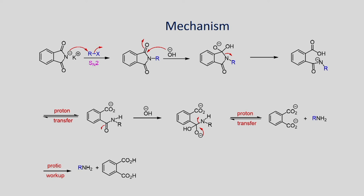The mechanism: when you have the phthalimide and react with base, you form the salt, which undergoes SN2 nucleophilic substitution with the alkyl halide to form the N-alkyl imide. When you react with aqueous potassium or sodium hydroxide, addition occurs to form an intermediate which loses a proton, forming another intermediate. This reacts further with the amide carbonyl group to form an intermediate, which converts into the primary amine and phthalic acid salt on workup.